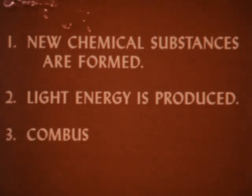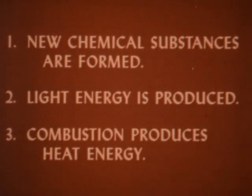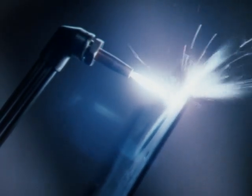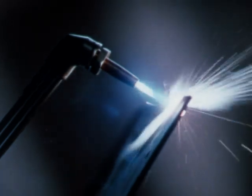Third, combustion produces heat energy. For example, burning acetylene gas with oxygen generates intense heat. When the oxyacetylene flame raises the temperature of the metal in a steel plate to its kindling temperature, a supplementary stream of oxygen is turned on in the torch. Increasing the concentration of the oxidizer causes the steel to become the fuel in combustion and the flame cuts a path through the metal.